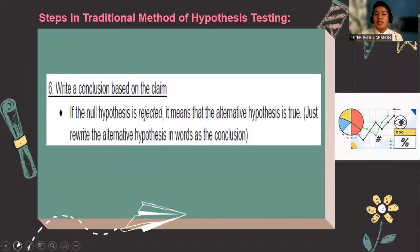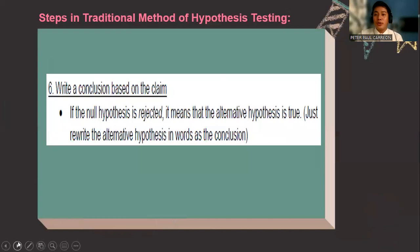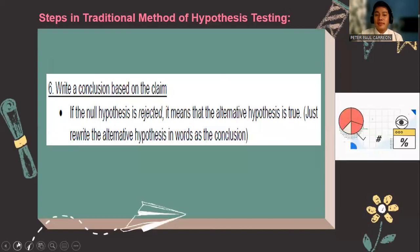And step number six, we have to write a conclusion based on the claim. So if the null hypothesis is rejected, it means that the conclusion is there is a significant difference. But when we fail to reject it, it means there is no significant difference.